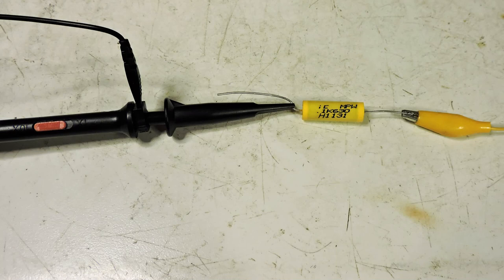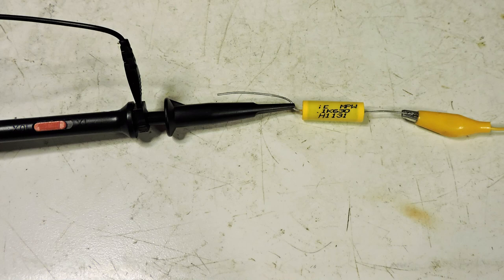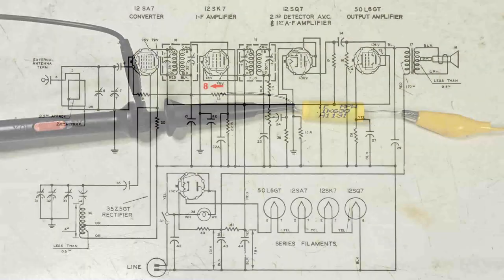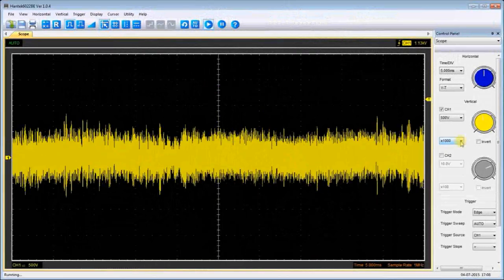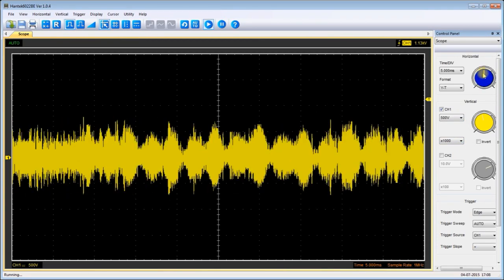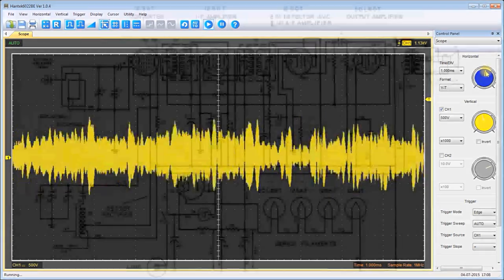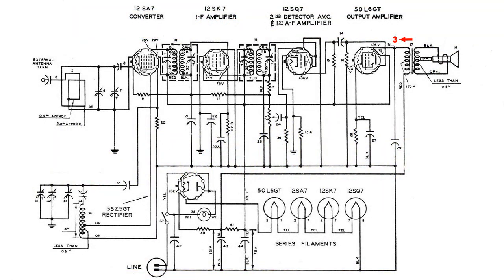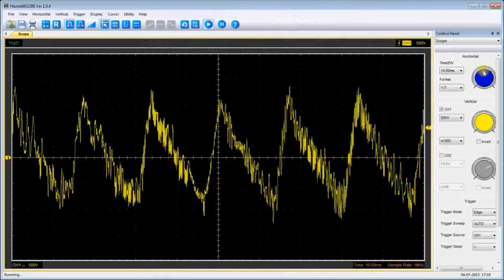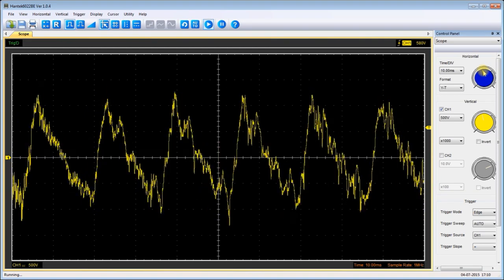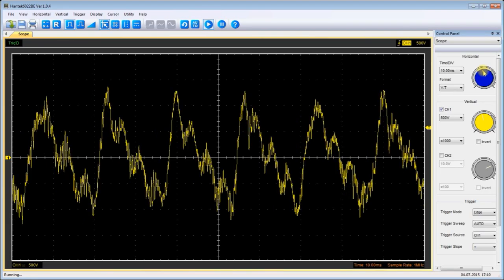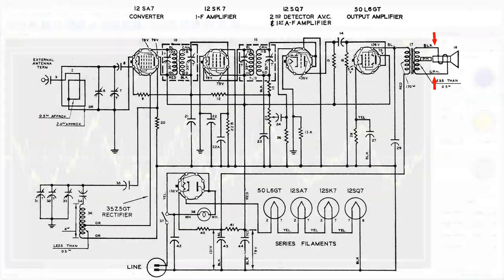The digital scope does not have an AC mode, so I have this 0.1 microfarad capacitor in series with the probe to block the DC. I'm now going to put the digital scope on the 12sk7. Now the digital scope is going to be on pin 3 of the 50L6. Now the digital scope is across the speaker.